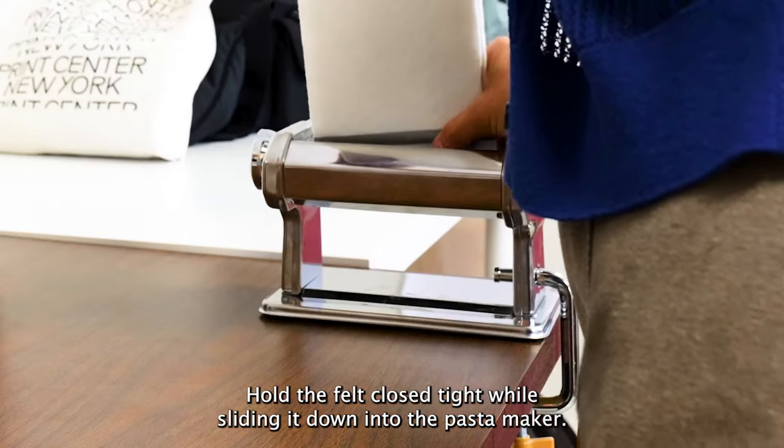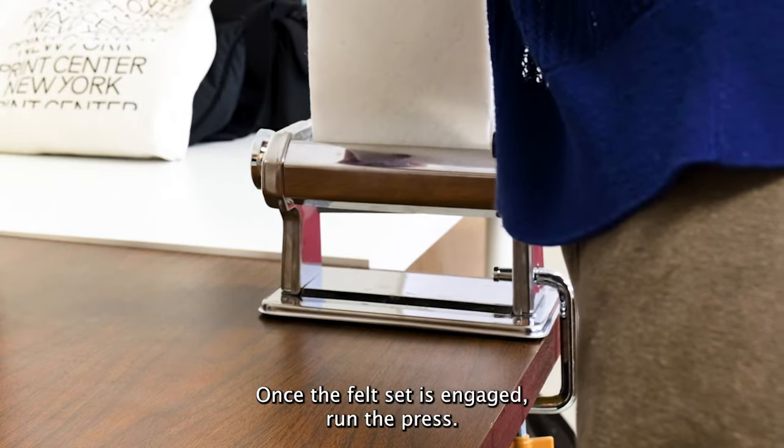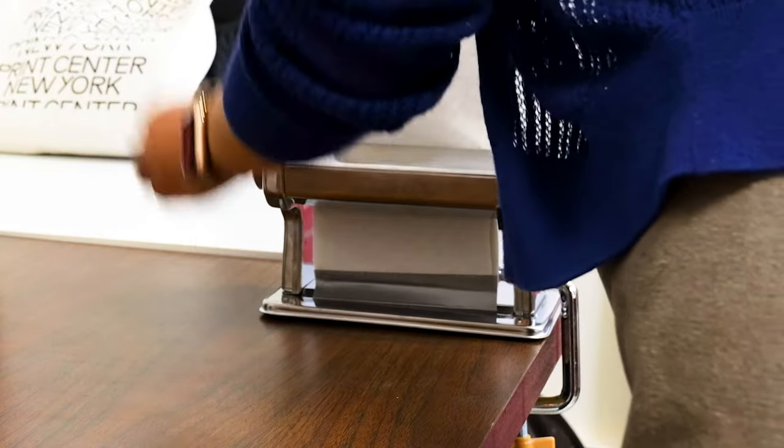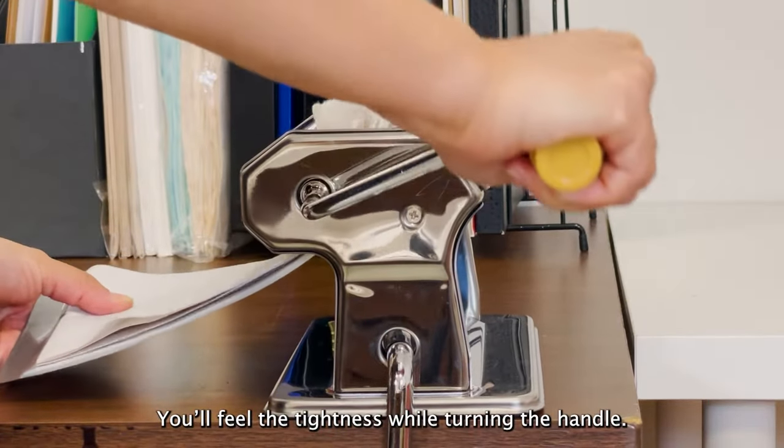Hold the felt closed tight while sliding it down into the pasta maker. Once the felt set is engaged, run the press. You'll feel the tightness while turning the handle.